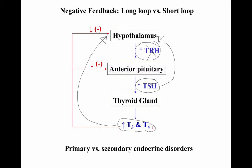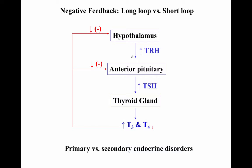The short loop occurs when the anterior pituitary's release of thyroid-stimulating hormone itself is sensed by the hypothalamus, which then stops releasing thyroid-releasing hormone — stopping further stimulation and halting the increase of T3 and T4. Both loops represent negative feedback: negating the original stimulus of low T3/T4. The system always senses its own function, adjusting via either downstream levels or intermediate hormone levels to restore homeostasis.